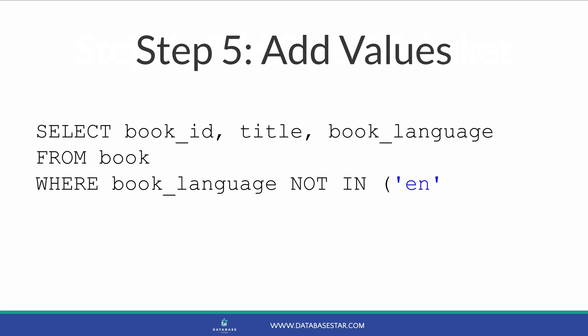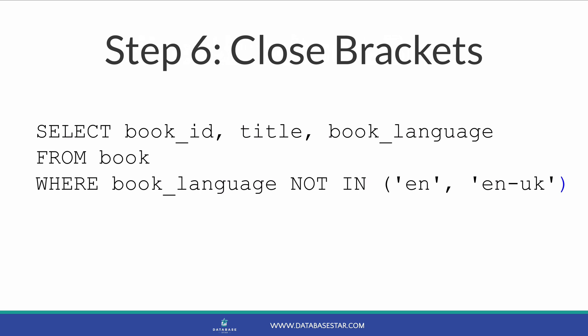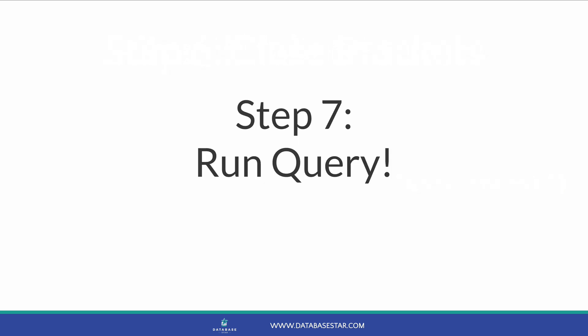The good thing about the NOT IN keyword is we can add multiple values without adding too much extra code. If I wanted to exclude other languages, I could. Let's say there was another code for English covering UK English books, which was EN-UK. I could add that into the NOT IN list just by adding a comma and then a value. The query will now exclude records where the book language is either of those two values — it's the equivalent of a NOT equals condition. Once you've added all your values, enter a closing bracket. Run the query and you should see the results that match the criteria. In our example, we would see books where the language is NOT equal to EN or EN-UK.